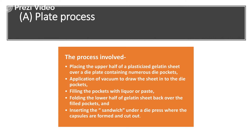It used different plates — one was the bottom plate and the second was the upper plate. The upper half of the plasticized gelatin sheet was placed over a die plate. These die plates have a large number of die pockets. With the help of vacuum, the sheet was drawn and the die pockets were formed. Once these die pockets were formed, they were filled with liquid or paste.